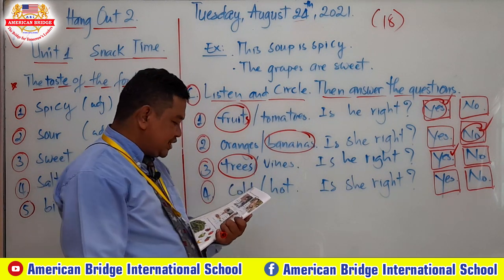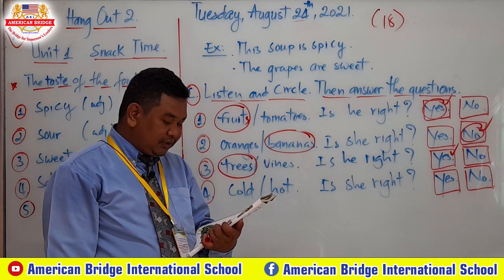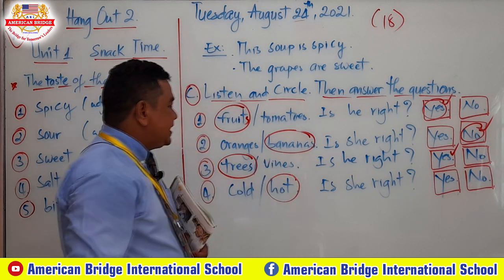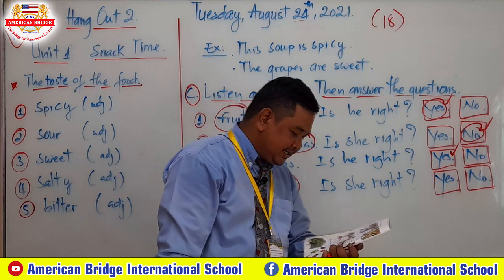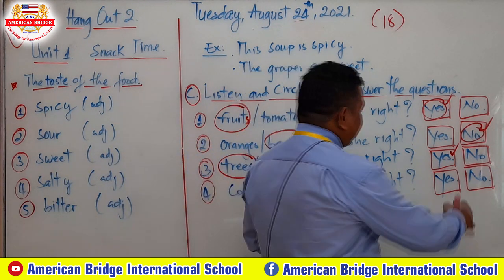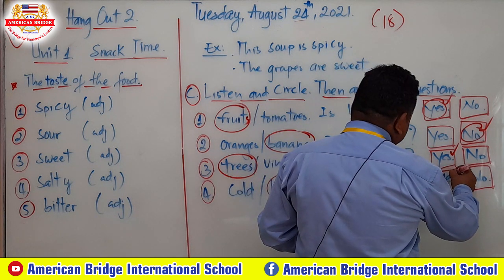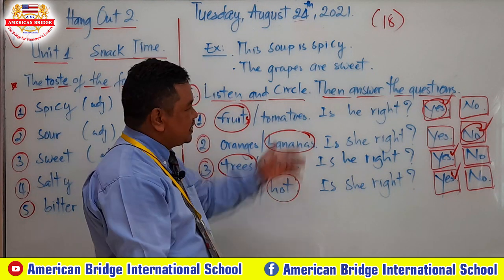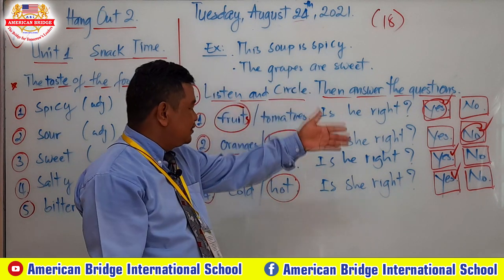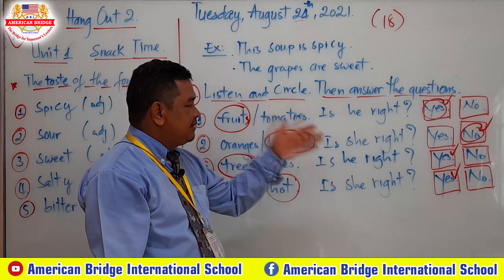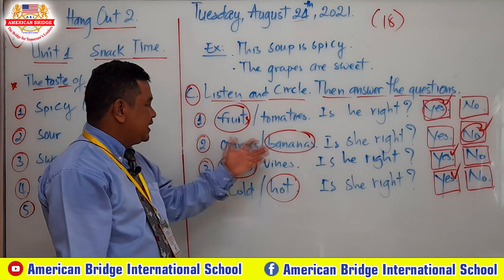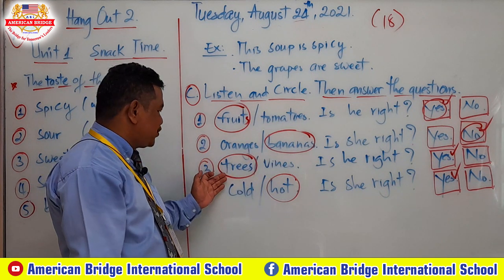Number 4: most banana trees like cold weather or hot weather? Is that correct? You hear 'hot' — so you have to circle 'hot.' Is he right? Yes, he is right, so you have to choose yes. So the answers are: number 1 — fruit, yes; number 2 — banana, no; number 3 — tree, yes; number 4 — hot, yes.